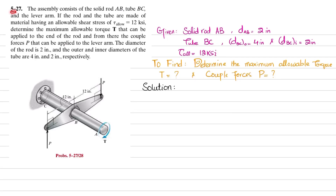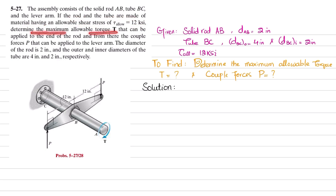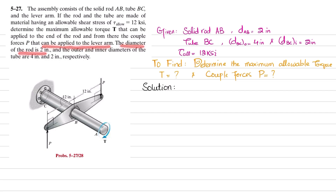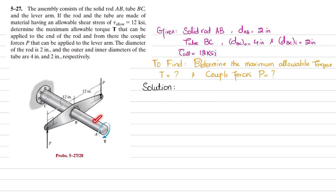Welcome back. Problem 5-27: this assembly consists of solid rod AB and tube BC and a lever arm. If the rod and tube are made of material having an allowable shear stress of 12 ksi, determine the maximum allowable torque T that can be applied to the end of the rod, and the couple forces P that can be applied to the lever arm. The diameter of the rod is 2 inches, and the outer and inner diameters of the tube are 4 inches and 2 inches respectively.